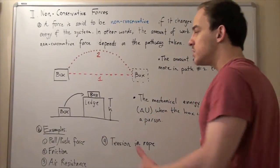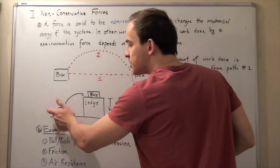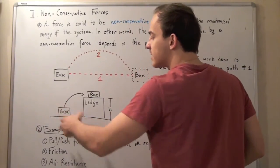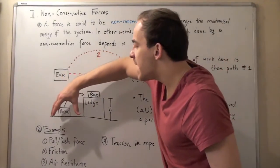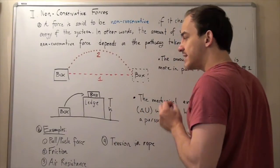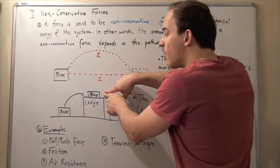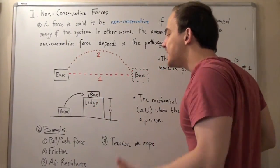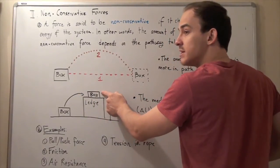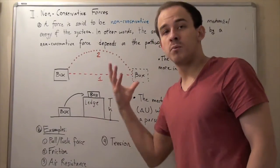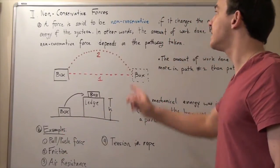Let's look at example 2. Suppose a box is lying on the ground — its kinetic energy is zero and its gravitational potential energy is also zero, because the height is zero and the box has no velocity. A person then pulls the box onto a ledge at height h above the ground. The box, now also stationary, has gained potential energy. The mechanical energy of the system changed from zero to mgh, meaning it was increased by the non-conservative pulling force exerted by the person.